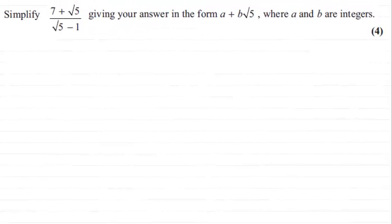Hi there. In this question we're asked to simplify (7 + √5)/(√5 - 1), giving your answer in the form a + b√5, where a and b are integers.